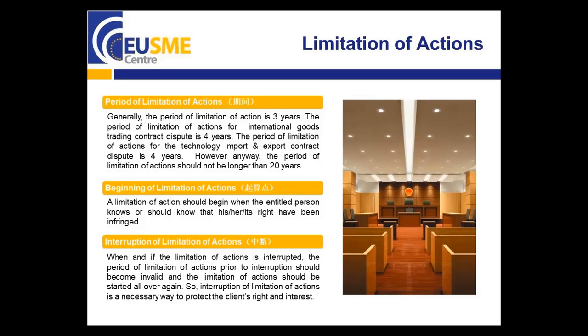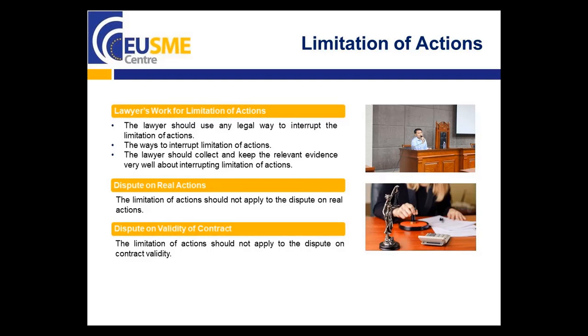Interruption of limitation of actions. When the limitation of actions is interrupted, the period of limitation of actions prior to interruption becomes invalid and the limitation of actions starts anew. Interruption of limitation of actions is a necessary way to protect the client's rights and interests. The lawyer should use any legal way to interrupt the limitation of actions from time to time, so that it can be restarted again and again. Ways to interrupt include suing the other side, sending a lawyer letter to the other side, negotiating with the other side, and so on. The lawyer should collect and keep relevant evidence about interrupting limitation of actions.